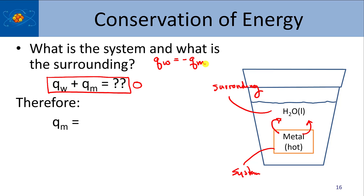Because of conservation of energy, Q of the metal is equal to the negative of Q of the water. It's possible to understand how much energy was lost from the metal by looking at the energy gained by the water. In the money analogy: if you wanted to know how much money I lost in a transaction, you don't have to ask me — you can just ask my son how much he got. He could tell you, 'my dad gave me ten bucks,' and then you know that's what I lost.